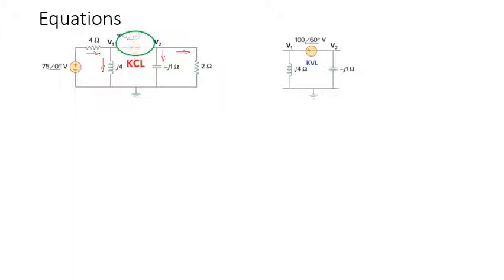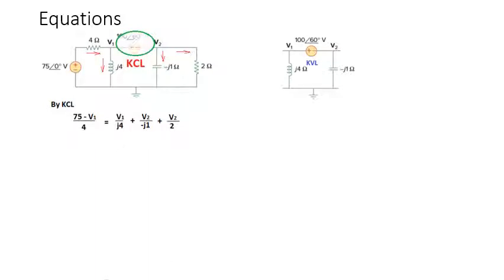I have marked current directions — you can mark your own current directions. Since it's a simple circuit, we'll do it directly. By KCL, the current entering is (75 − v1) divided by 4, and the leaving currents are v1 divided by j4, and v2 divided by −j1.